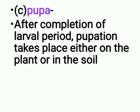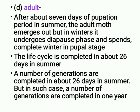Pupa: after completion of larval period, pupation takes place either on the plant or in the soil. Adult: after about seven days of pupation in summer, the adult moth emerges. But in winter it undergoes diapause phase and spends the complete winter in pupal stage. The life cycle is completed in about 26 days in summer, and a number of generations are completed in one year.